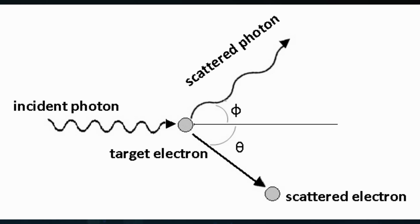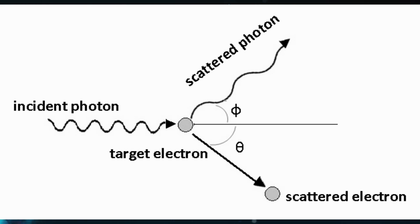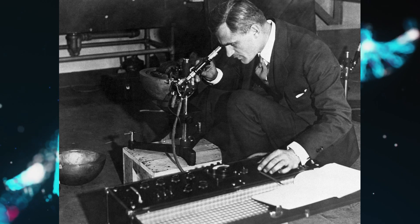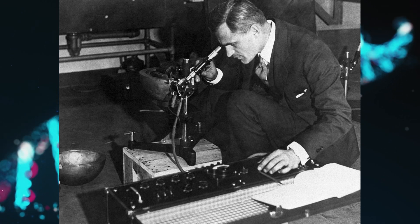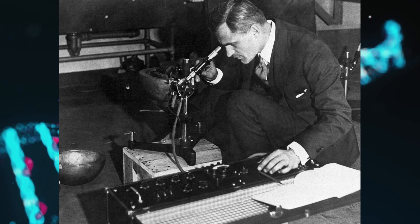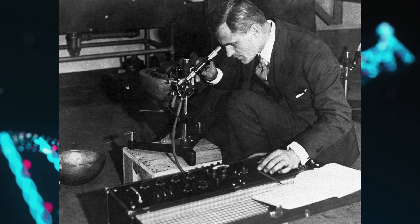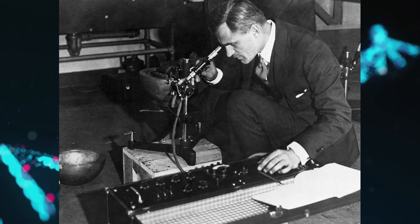Contrary to this prediction of classical physics, observations show that when x-rays are scattered off some materials such as graphite, the scattered x-rays have different wavelengths from the wavelength of the incident x-rays. This classically unexplainable phenomenon was studied experimentally by Arthur H. Compton and his collaborators, and Compton gave its explanation in 1923.